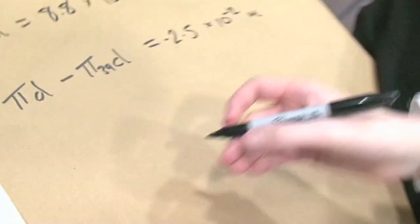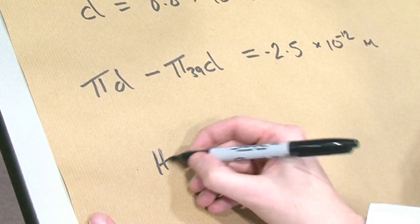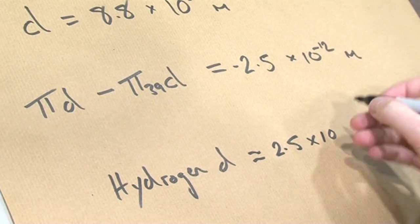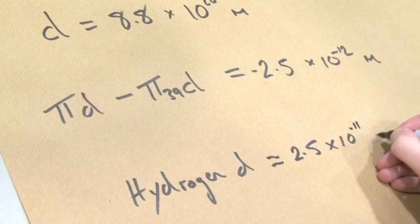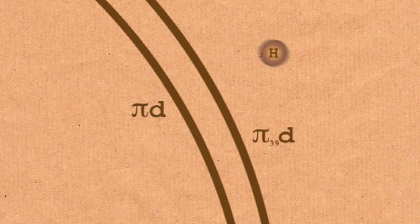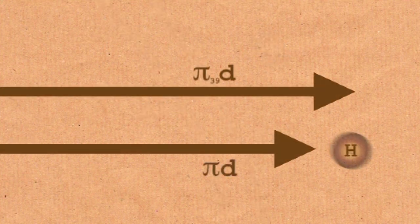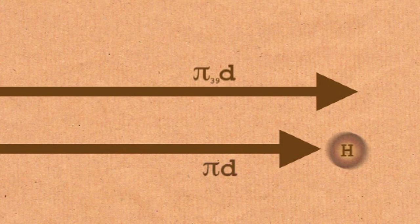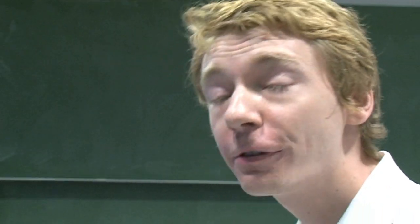That's how accurate it is — the difference between my approximation and the real value. A hydrogen atom, Wolfram Alpha told me, has a diameter of about 2.5 times 10 to the minus 11 metres. So in fact, this is more accurate than a hydrogen atom. So why do we calculate pi to 10 trillion digits? These days, it's a way to test our computers, our supercomputers and our algorithms — to see how good they are. That's why computer scientists are interested in this sort of thing.